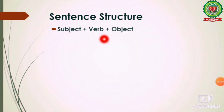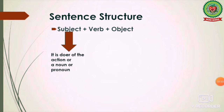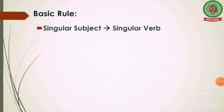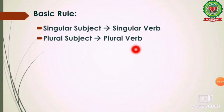The sentence structure is: subject plus verb plus object. The subject is the doer of the action — a noun or pronoun — and it comes before the verb. The verb is the word that denotes action or state of being, having, or doing. The basic underlying rule in subject-verb agreement is: singular subject takes a singular verb, and plural subject takes a plural verb.